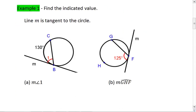Here's an example. In the pictures below, find the indicated value. You do know, however, that line m is tangent to the circles. Try this on your own first, then resume the video when you're ready to check your solution.